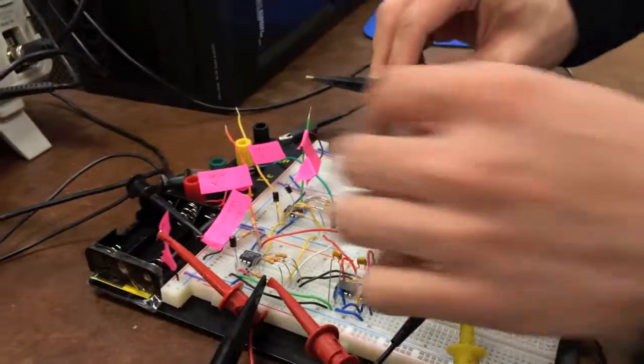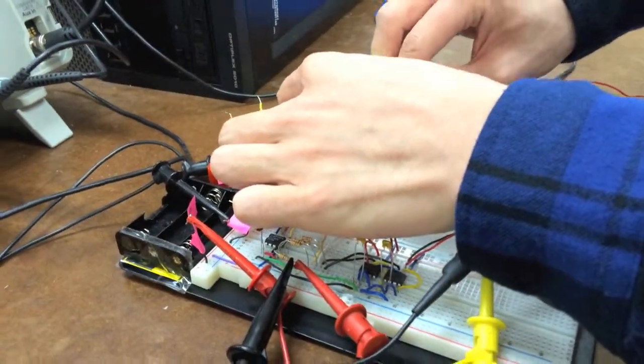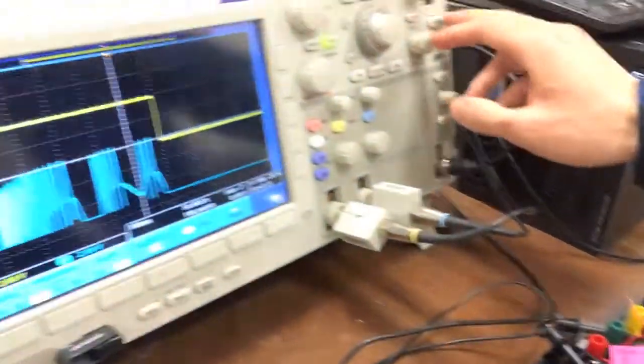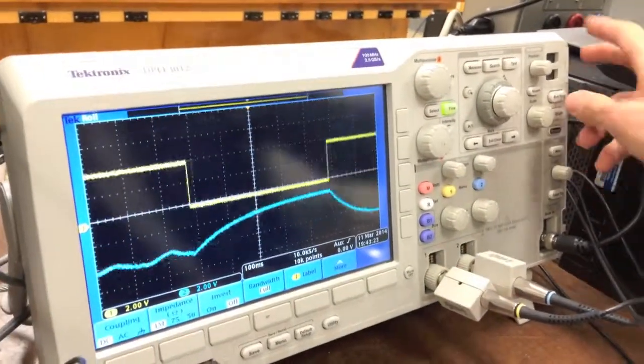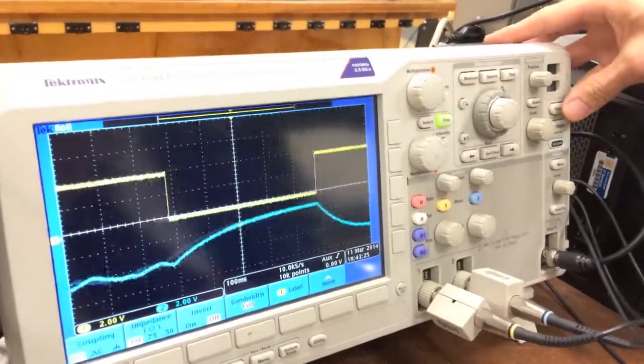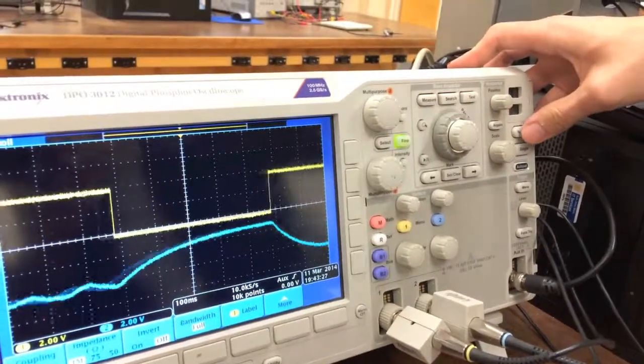And next, we're going to show you the Z variable. This one is actually the negative Z variable. This one is right here.